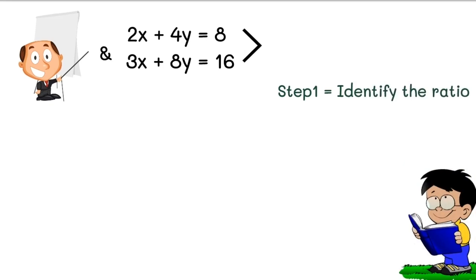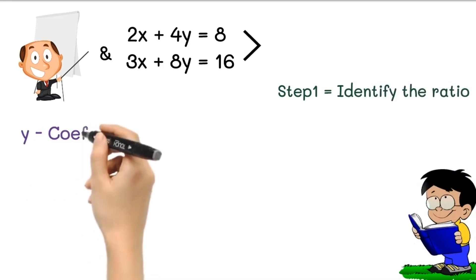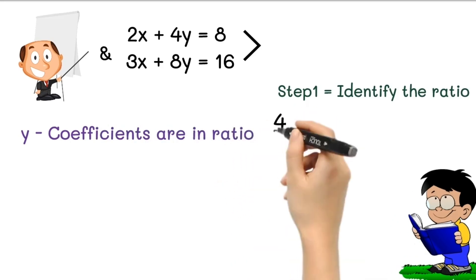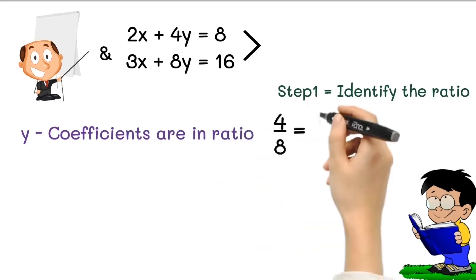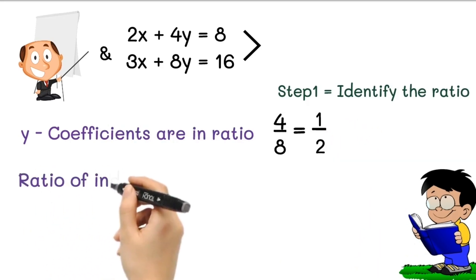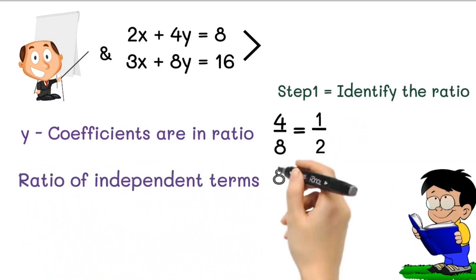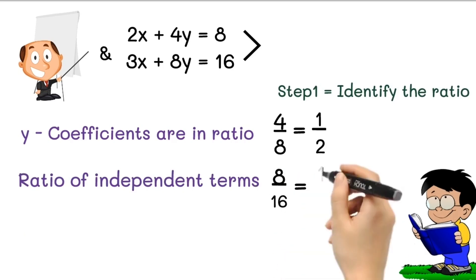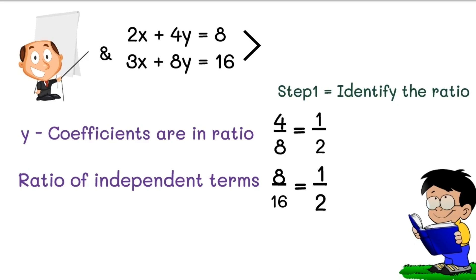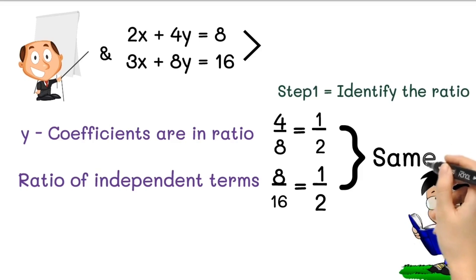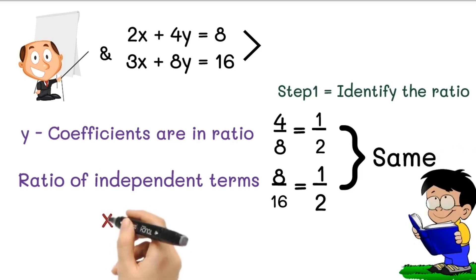In the first step, we need to identify the ratio. If you observe both equations, you will see that the y coefficients are in ratio. Take the ratio of y coefficients: 4 upon 8, which is 1 upon 2. Now take the ratio of independent terms: 8 upon 16, which is also 1 upon 2.